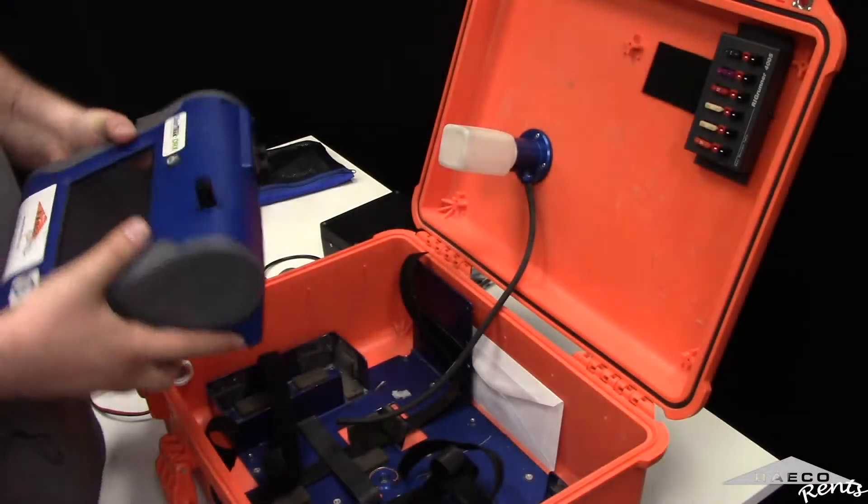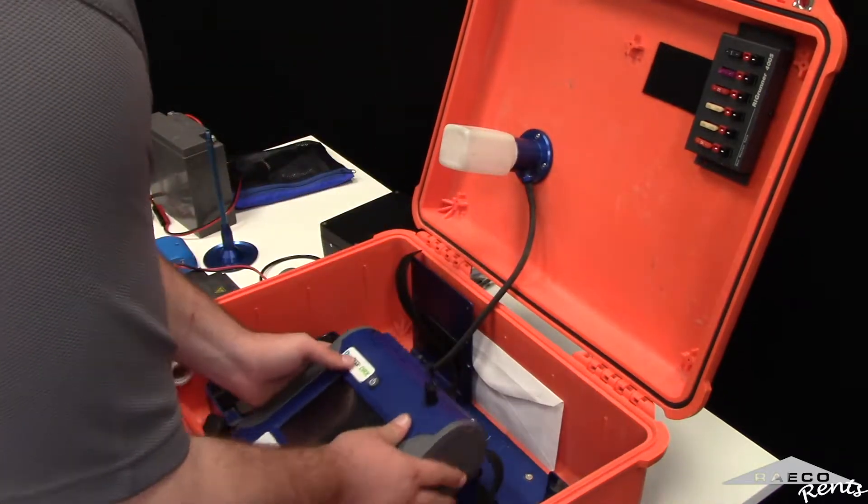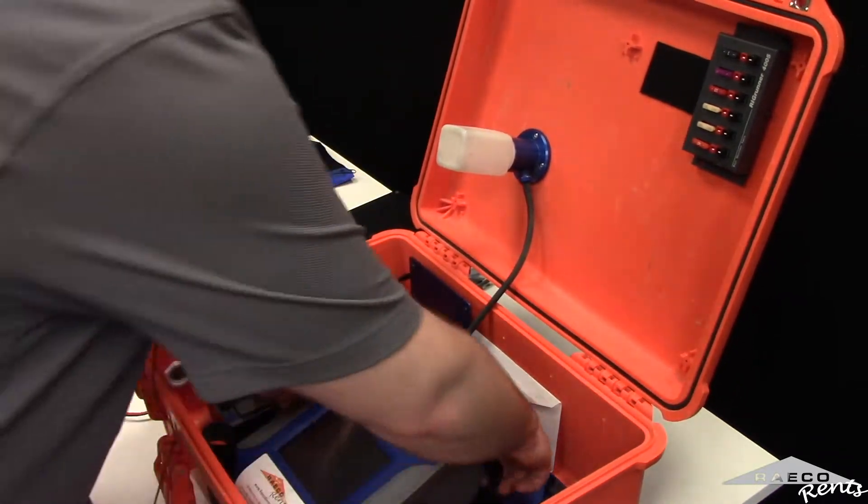So the first thing that you're going to expect when you're creating a dust track enclosure is to have the dust track in this nice little slot here. Step one.